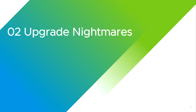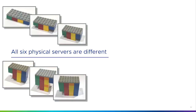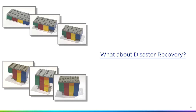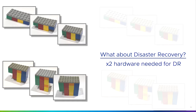So we've got an upgrade nightmare here because we've got six different physical servers, all sized differently for different applications. If I'm going to replace these six servers, I'm going to need six servers plus some for disaster recovery — an identical server for each one I'm buying. So I need 12 servers in total, six different types, two of each type. Twice the hardware needed for DR, fault tolerance, or resiliency.